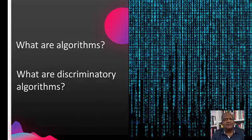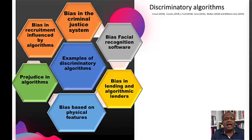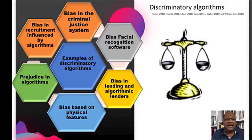Now let's focus on some forms of discriminatory algorithms. Algorithms can lead to biases in the criminal justice system. For example, it should be noted that when algorithms are used for sentencing, Black individuals tend to receive longer sentences than others within the population.